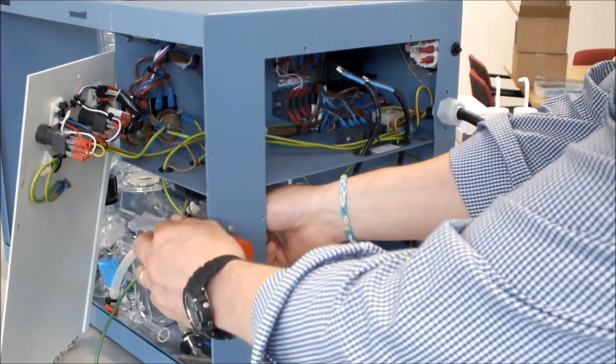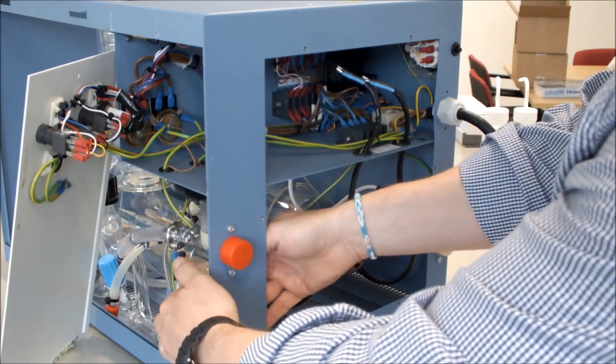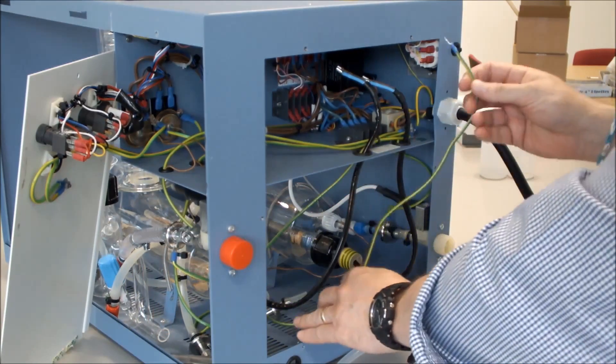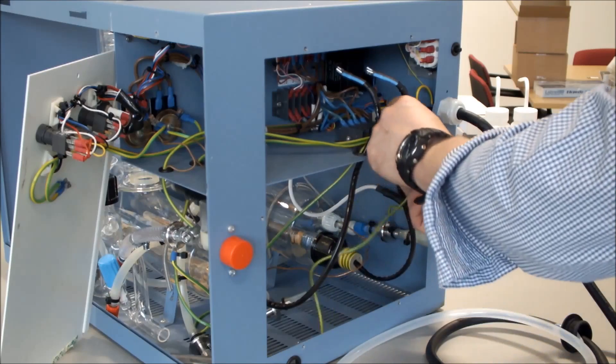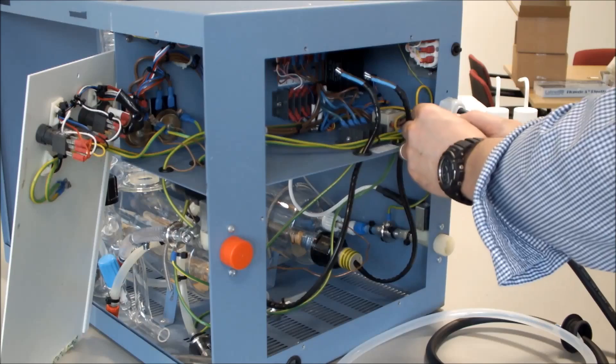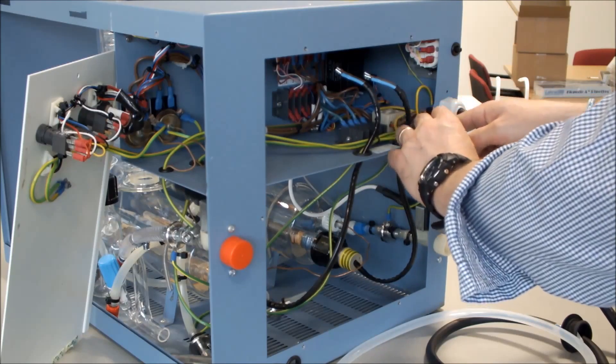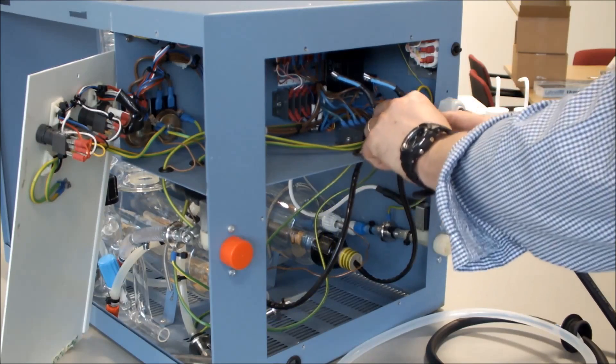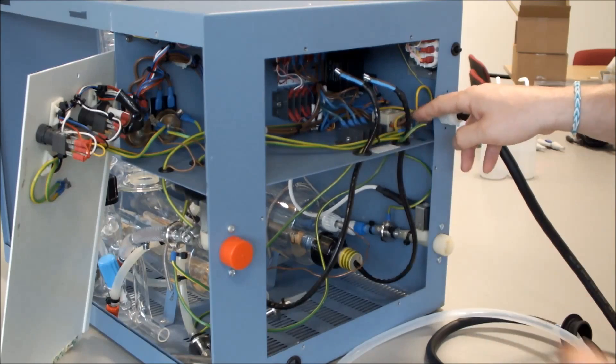From our deioniser pipe assembly, we then take our earth cable, feed it through the hole in the chassis and connect it to the earth point. Undo the nut, fit the earth cable, put the nut back on and tighten it up.